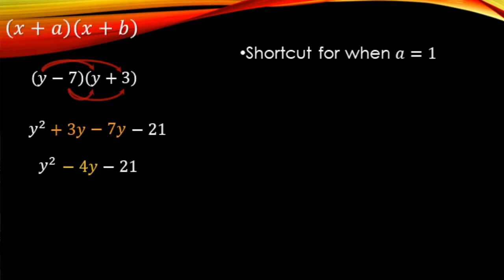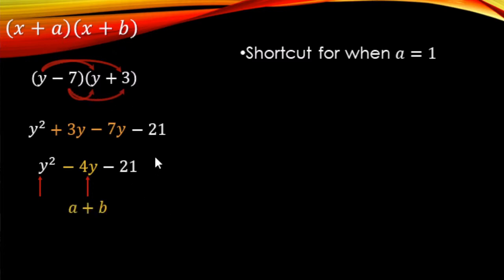Now what we want to do for the shortcut is back up and see where everything came from so we can do this a lot faster. The y squared just came from y times y. For these a equals 1 style ones, we have no coefficient in front of our variables. This middle number came from 3 and minus 7 — you just add up the two numbers. And then this minus 21 uses the same two numbers, except they were being multiplied instead of added.